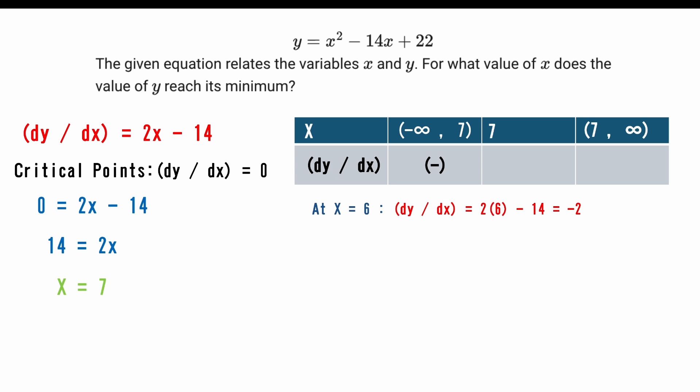At 7, we already did that. It's going to be 0. Now when we take an x value from 7 to infinity, we can plug in 8, and our dy/dx is going to be 2 times 8 minus 14, which is 2. Meaning our derivative from 7 to infinity is going to be positive.